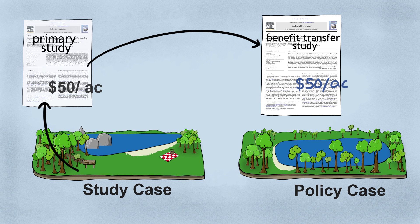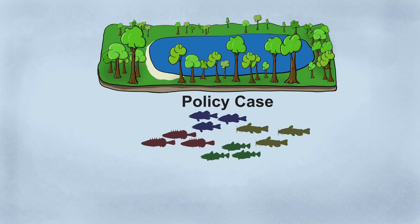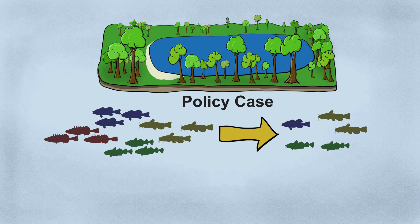But like with house valuation, for this to be at all viable, the study and policy cases should be very, very similar. So let's say we wanted to estimate the change in value of recreational fishing at our policy site. Let's say the change would be a lower amount and lower diversity of fish, because of a new source of pollution upstream. We would want to find a study case that had a similar change as well as being similar in other areas.